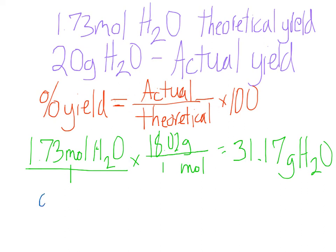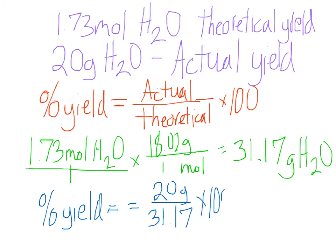So now we just simply plug it into this equation. And your percent yield equals your actual which we're using grams, 20 grams, divided by your theoretical 31.17 times 100. That equals 20 divided by 31.17 equals 64.2%. And there you have it. Here is your percent yield based on your actual yield and your theoretical. So we've gone over the limiting reactant, the excess, the theoretical yield, actual yield, and the percent yield.